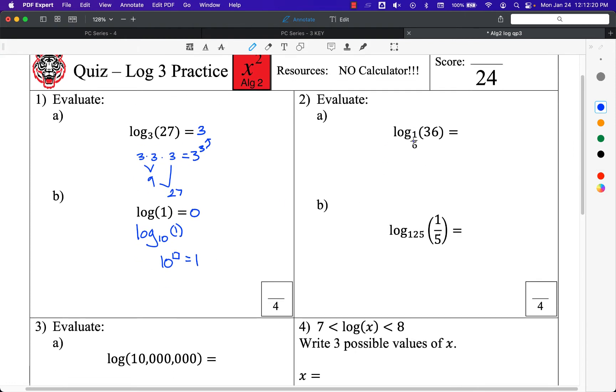Number 2, log base 1/6 of 36. This is asking 1/6 to what power does it need to be raised to to get to 36? If I raise it to the power of a negative something, negative means flip. So if I flip this over, 6 over 1. 6 to what power gives me 36? 6 times 6 is 36, so 6 squared is 36. That means our answer was negative 2. Negative came from taking the reciprocal or flipping the fraction, and then the 2 came from 6 to the power of 2 giving us 36.